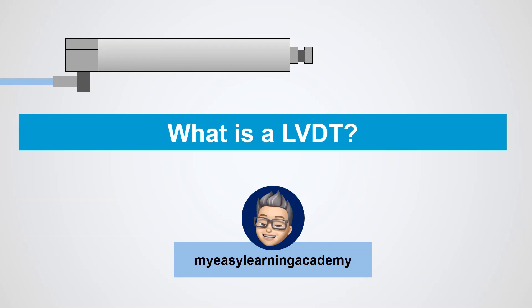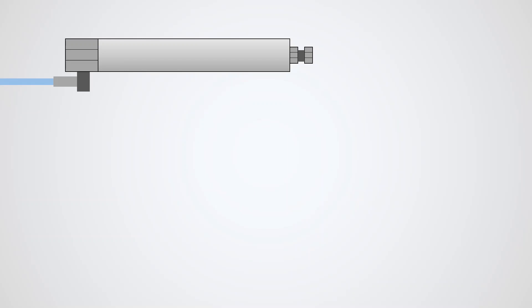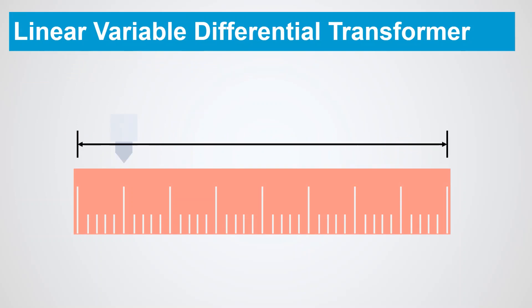LVDT is an acronym for Linear Variable Differential Transformer and is a common type of electromechanical sensor that can convert the rectilinear motion of an object along an axis into a corresponding electrical signal.